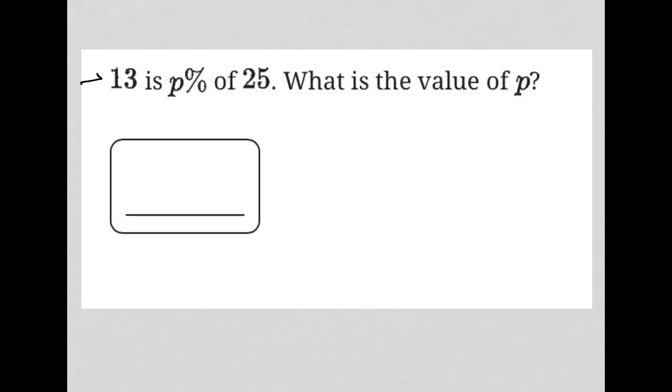So this question says 13 is P percent of 25. This is a direct translation, and what I mean by that is that the wording here can be translated completely into a math equation. 13 is means equals, P percent—I like to put P over 100—of means times 25. So every word there meant something mathematically.